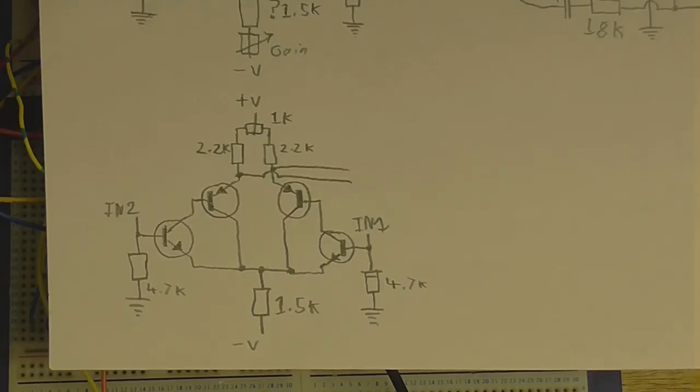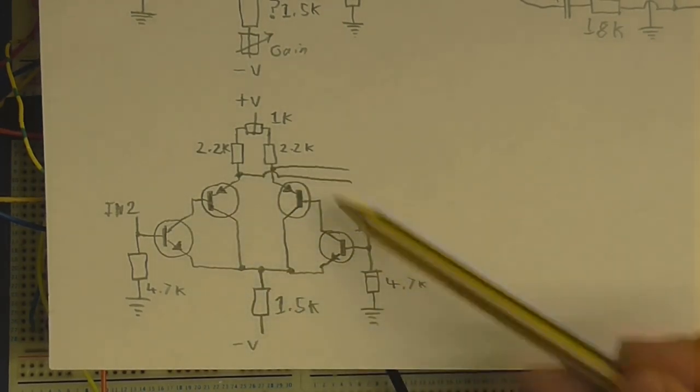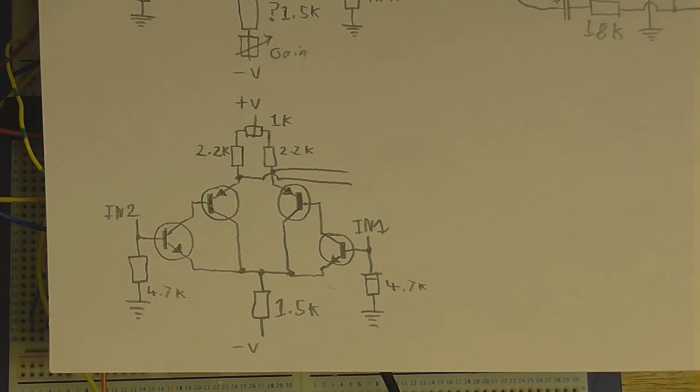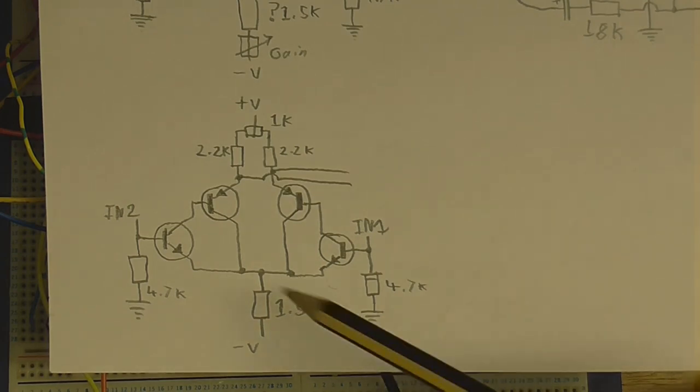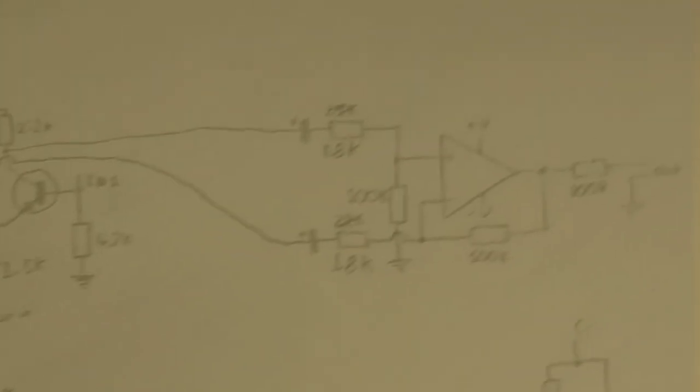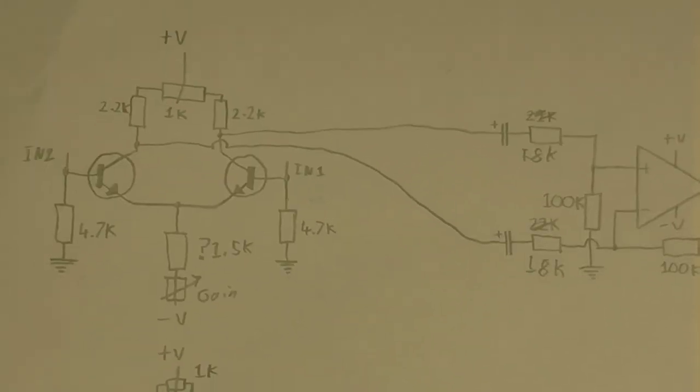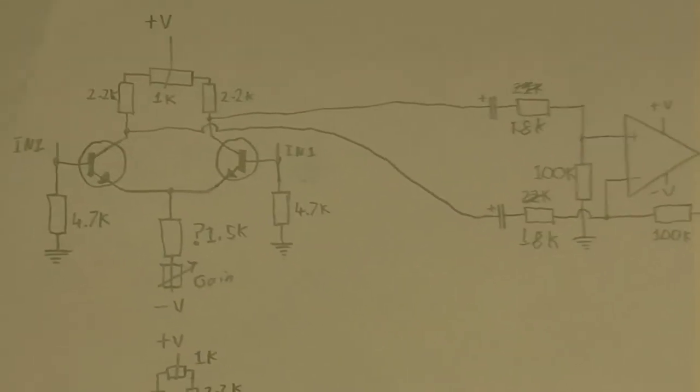And this is what the input stage is gonna be like. So, now we've got our complementary feedback pair transistors. We've got two on this side, two on this side. And here, we've got two wires going out to the op amp. So, apart from this here, it's exactly the same as this. So, I'm gonna try that out and see if it works.